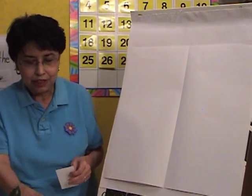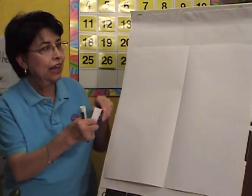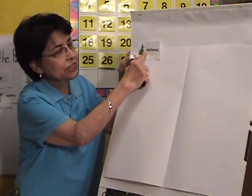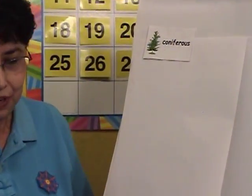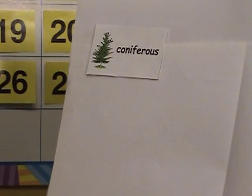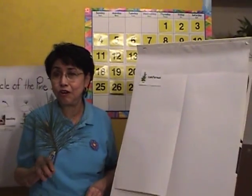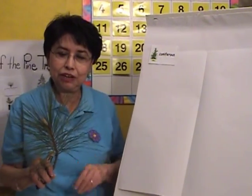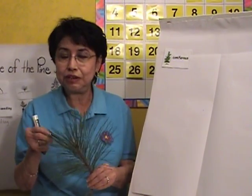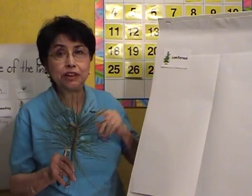Today we're going to talk about what type of tree this branch comes from — and that is the coniferous. This type of tree, the pine tree, we call it coniferous. What this means is that this type of leaf stays green year round. We're teaching early childhood, and these children begin to identify that the trees with the long needle-type leaves are the ones that stay green. They're called coniferous.